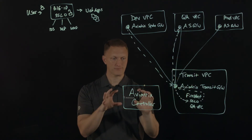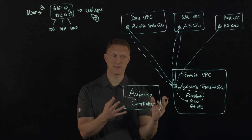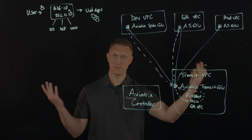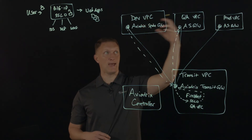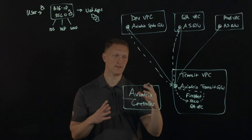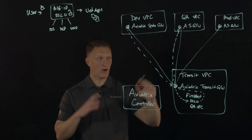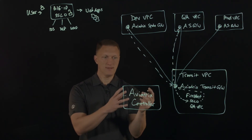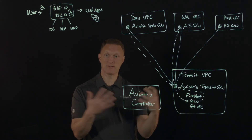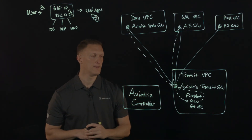As you establish all this via the Aviatrix controller, all the routing, IPs, and subnetting are taken care of by Aviatrix — that's how you can insert security devices transparently. If you add another VPC or remove one, Aviatrix automatically updates routing tables, subnets, and IPs to maintain connectivity. It actually programs the underlying VPC routing table directly, integrating with the underlying cloud technology, so you can see the Aviatrix configuration right there in the VPC routing table.